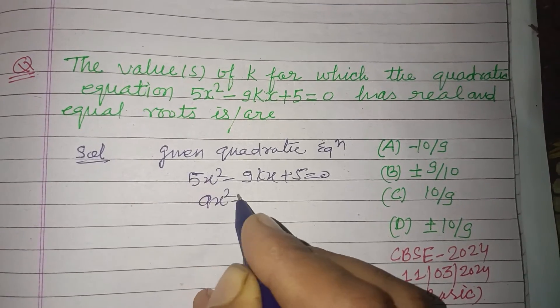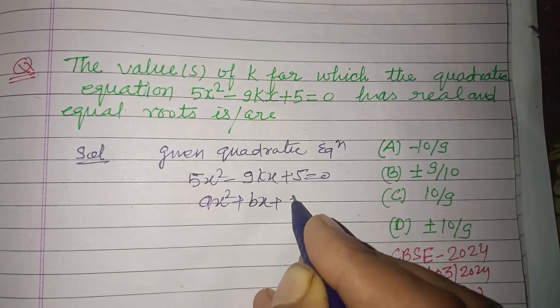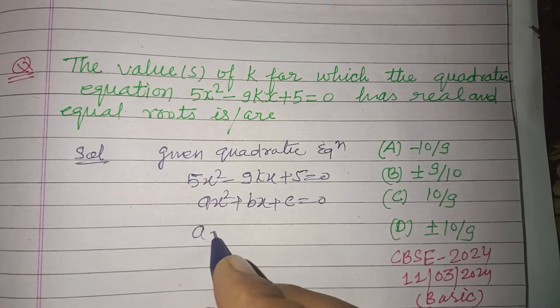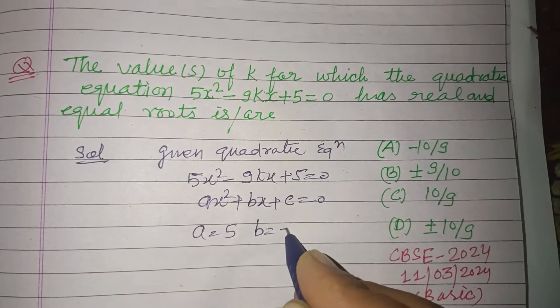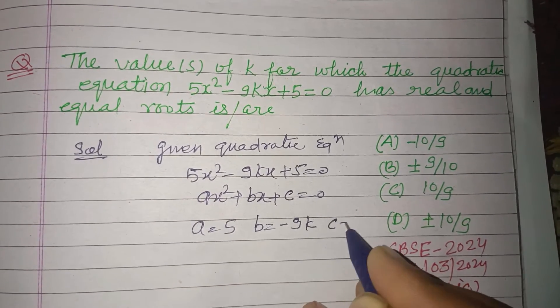Comparing this with standard form ax² + bx + c = 0, here a is 5, b is -9k, and c is 5.